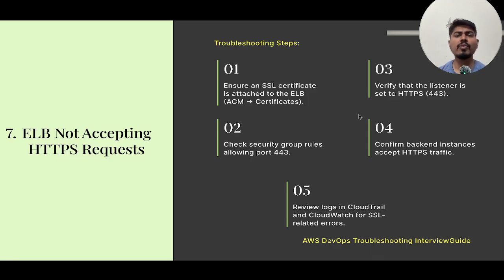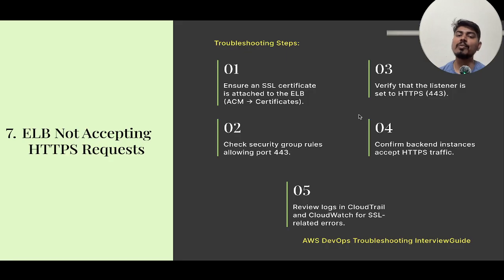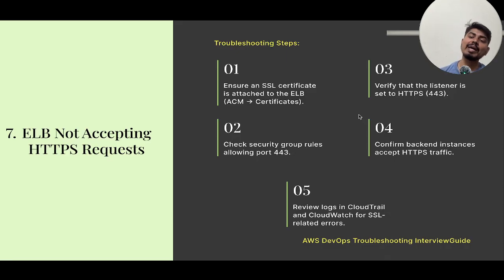The next question is: ALB not accepting HTTPS traffic. Ensure an SSL certificate is attached to your ALB — go to ACM and check the certificates for your domain and verify the certificate is attached to the ALB. Check security group rules are allowing port 443. Verify the listener is set to HTTPS. Confirm the backend target group instances are accepting HTTPS traffic. Review logs in CloudTrail and CloudWatch for SSL-related issues.